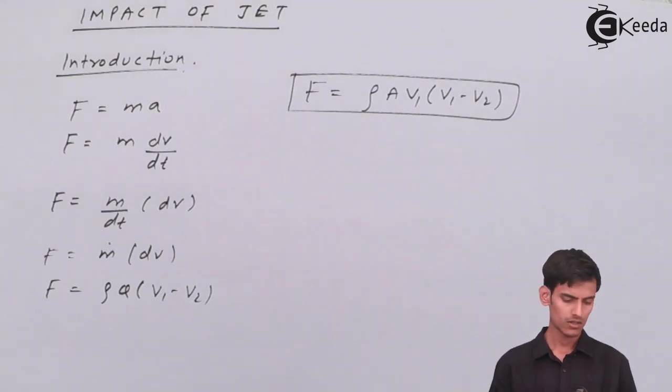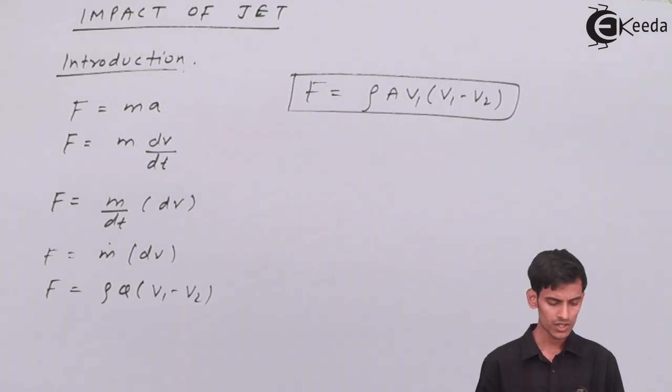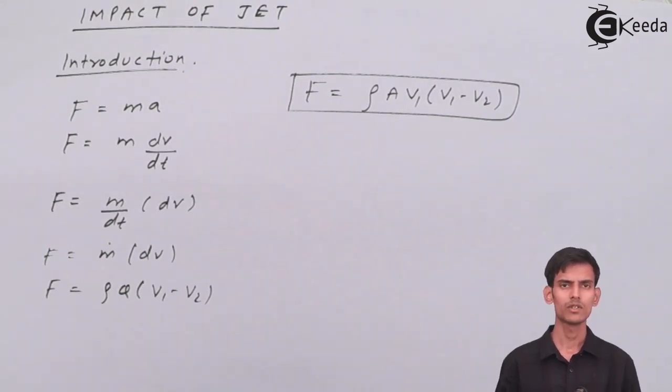Next, as we can see here the whole thing is derived from the basic equation Newton's second law F equal to ma. And we finally arrived at the equation rho a v1, v1 minus v2. Change in velocity is v1 minus v2. v1 v2 is the velocity of jet before it strikes the plate and after it strikes the plate.